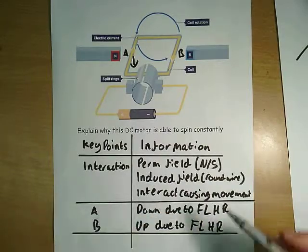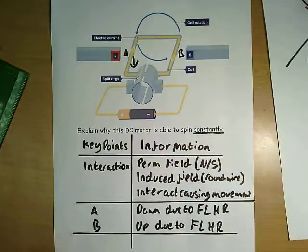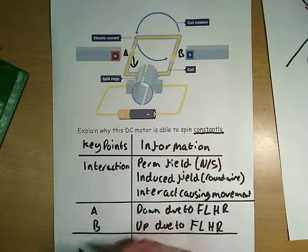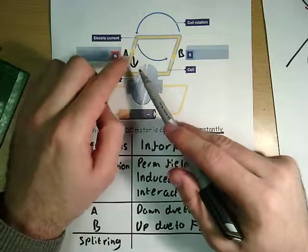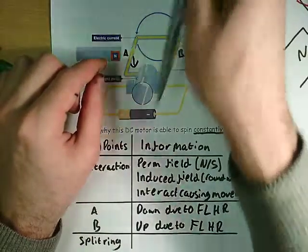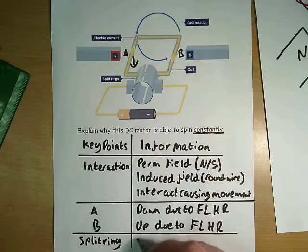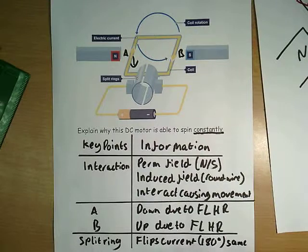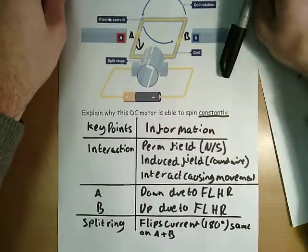The last bit of this question is why is it able to spin constantly — why is it not just going up and then stopping when the forces get to the top? That is due to the split ring commutator. Due to the split ring, every time the coil flips round, the current is reversed. That means the current on side A is always going in that direction and the current on side B always comes in this direction. The current flips every 180 degrees, so it's always the same on each side, and that means the force will always be in the same direction.